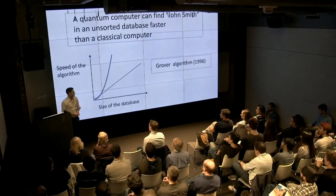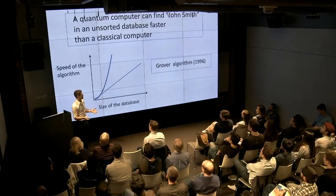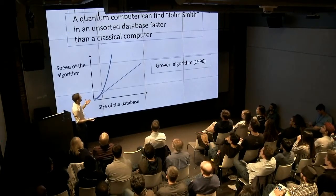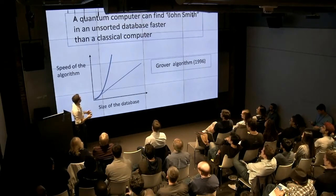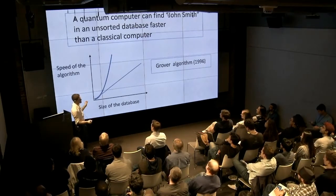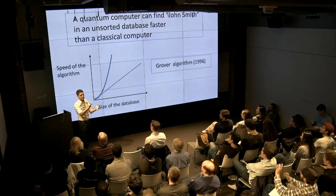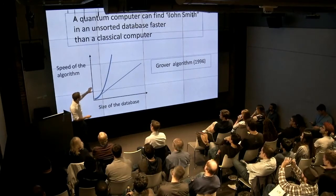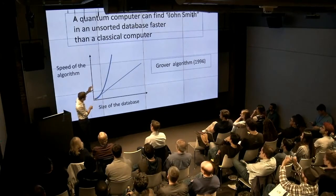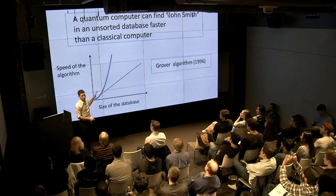I'll give you an example. This is Grover's algorithm, discovered in 1996. Basically what it does is find the name John Smith in an unsorted database faster than a classical computer. For a classical computer the speed is linear. For a quantum computer, the speedup is quadratic.